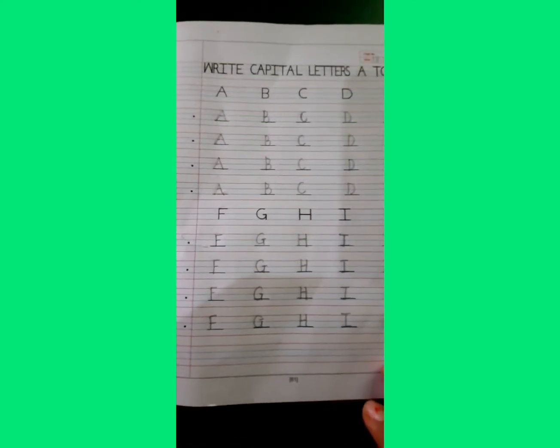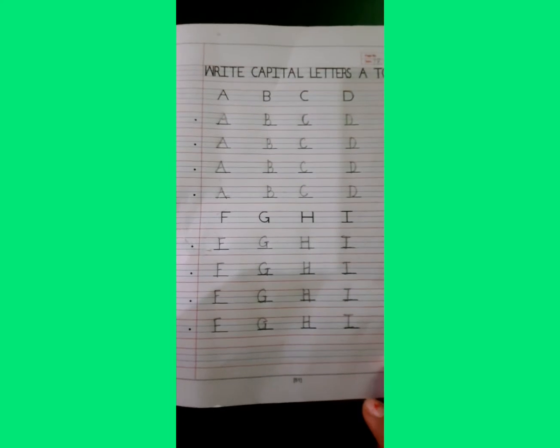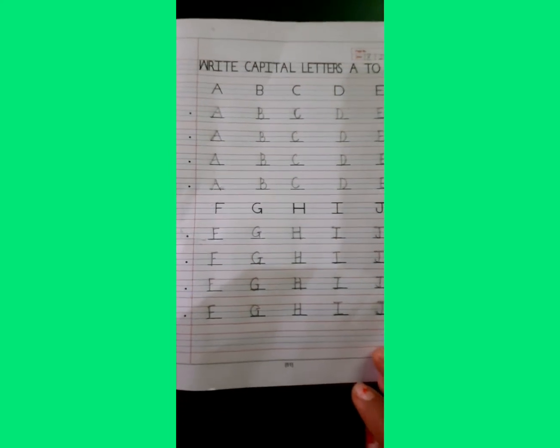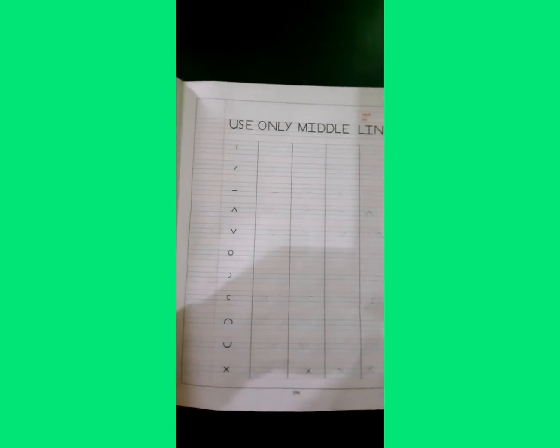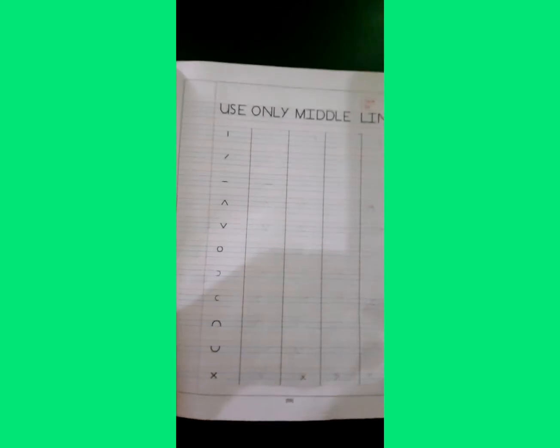Now children I have finished writing capital letters A to J in English workbook page number 51. Now children we will come to page number 59 and we will write lines in middle lines like this.